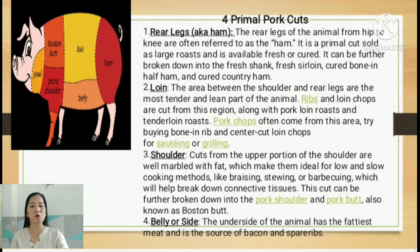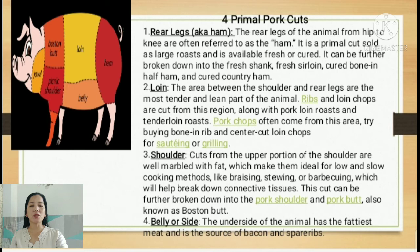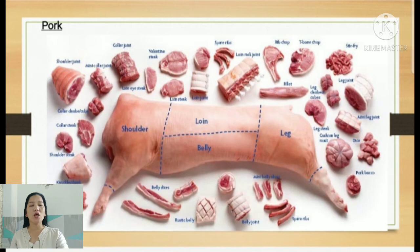The last primal cut of pork is the belly or side — called 'balamban' in Filipino. It is the underside of the animal, has the fattiest meat, and is the source of bacon and spare ribs. So the four primal cuts of pork are: shoulder, loin, belly, and the rear leg (ham), as shown in the illustration.